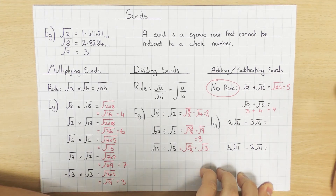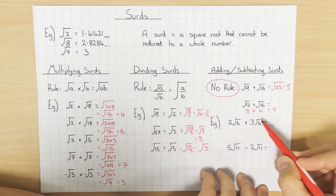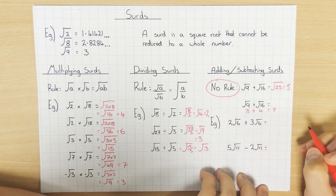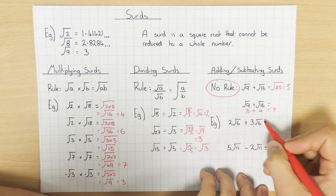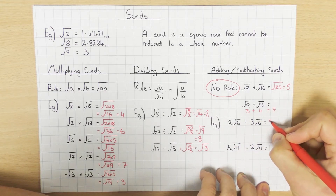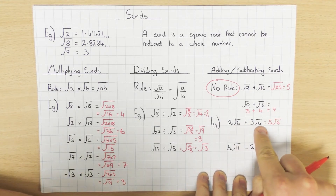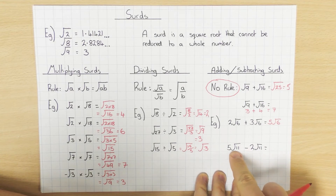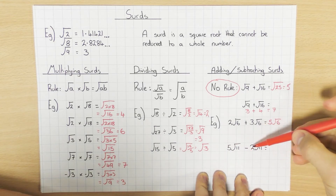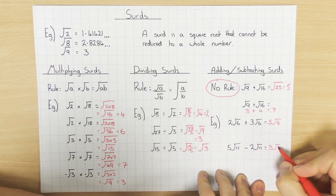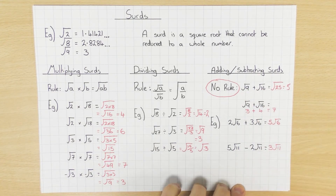With the slight exception: if you have the same surd — for example root 6 and root 6 — when they are the same, you can add them. So 2 root 6 plus 3 root 6 is 5 root 6. But I can only do that because they are both root 6. Same thing for subtracting — if they are both root 11, then 5 root 11 minus 2 root 11 is 3 root 11. But that's only because they are the same. You can't do it if they are different.